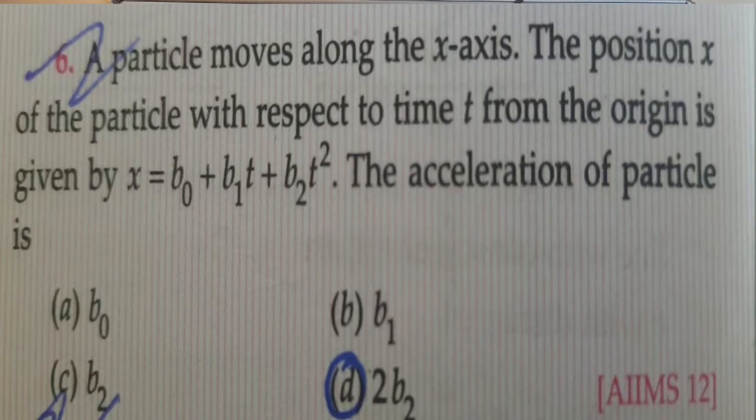A particle moves along the x-axis. The position x of the particle with respect to time t from the origin is given by x equals b0 plus b1 t plus b2 t square. The acceleration of the particle is.